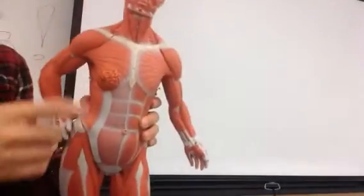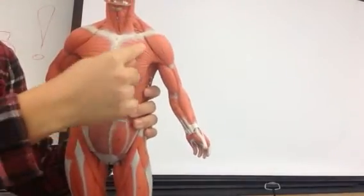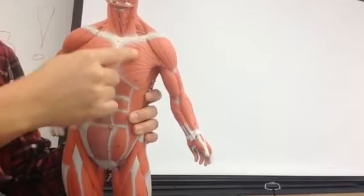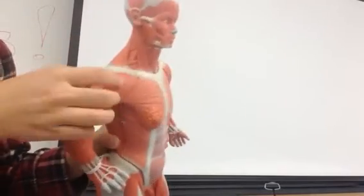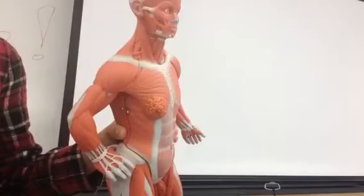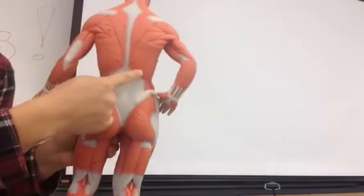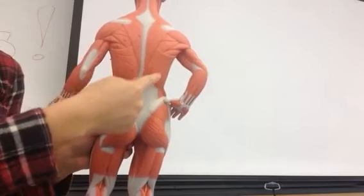The pectoralis major. The pectoralis major is this one right here. The deltoid is this part, right? Everybody know that deltoid right here. Latissimus dorsi. That's the lower back. So it's this muscle right here on the lower back.